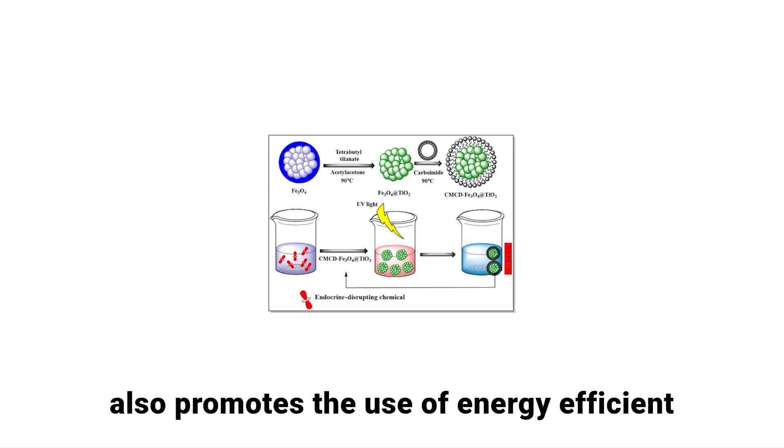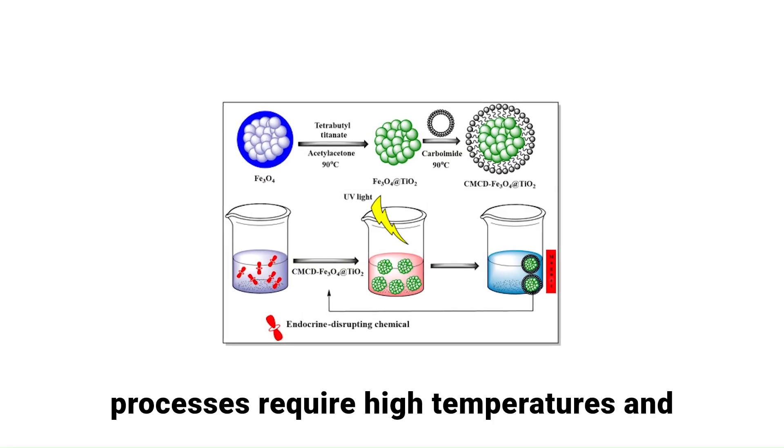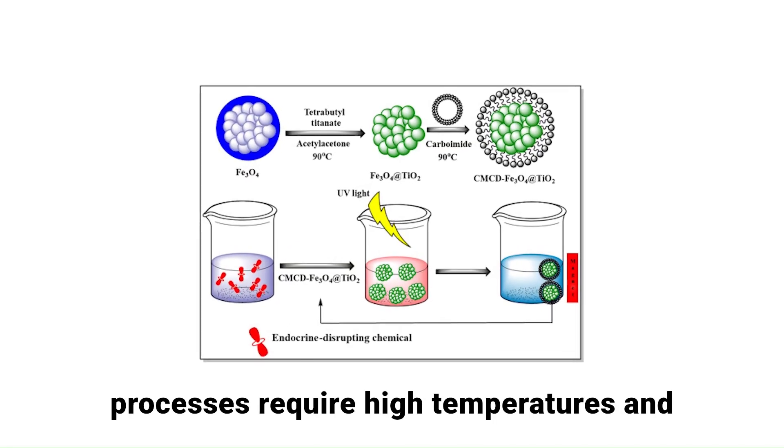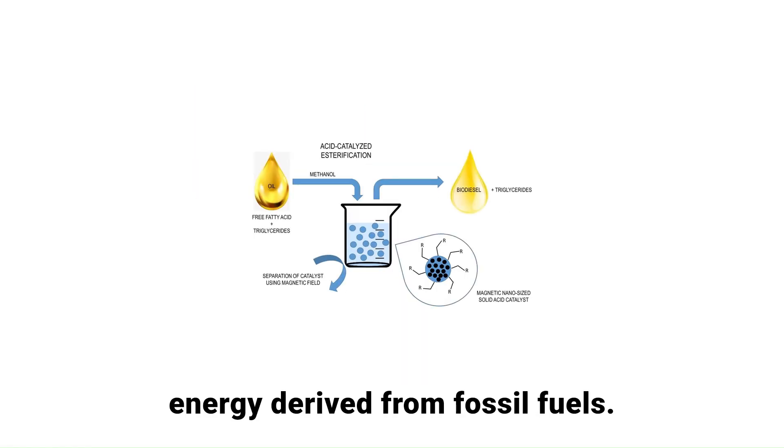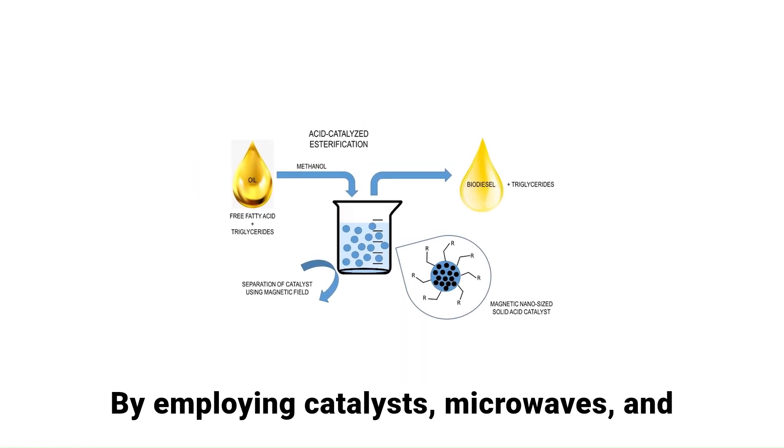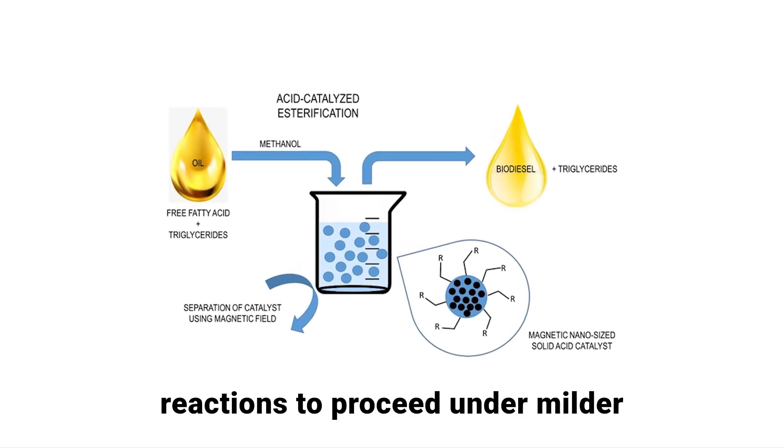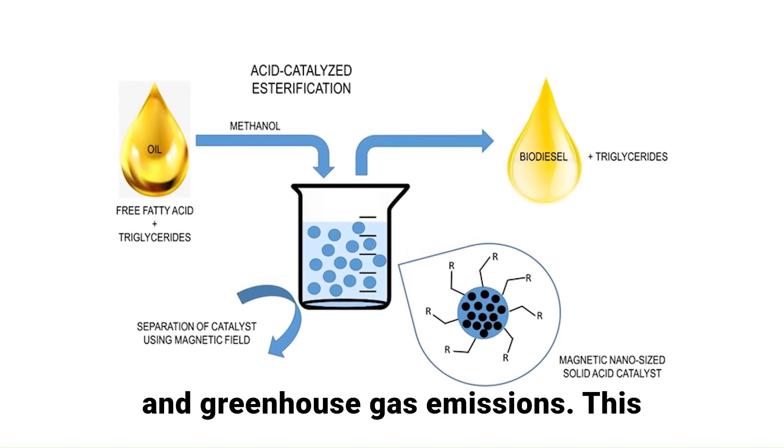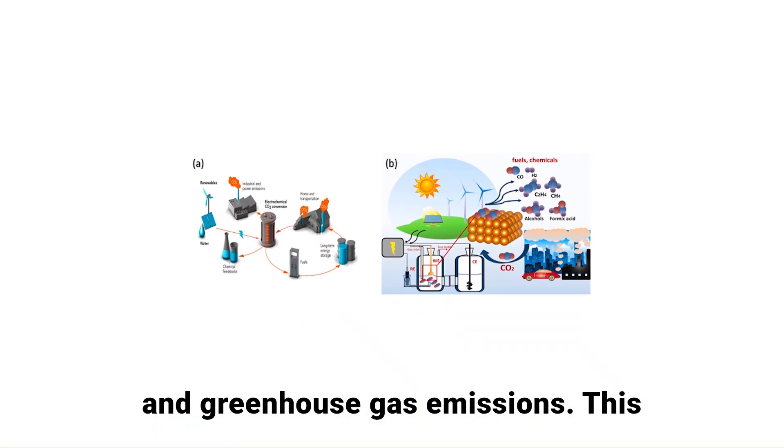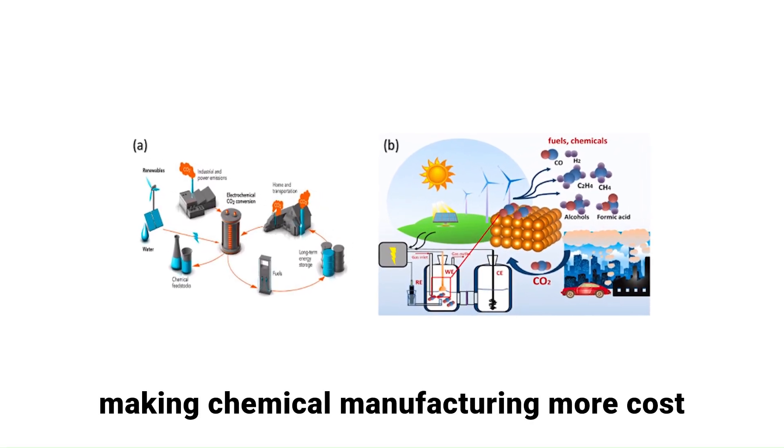Green chemistry also promotes the use of energy-efficient reactions. Many conventional chemical processes require high temperatures and pressures, consuming large amounts of energy derived from fossil fuels. By employing catalysts, microwaves and biocatalysts, green chemistry enables reactions to proceed under milder conditions, reducing energy consumption and greenhouse gas emissions. This approach enhances sustainability while making chemical manufacturing more cost-effective.